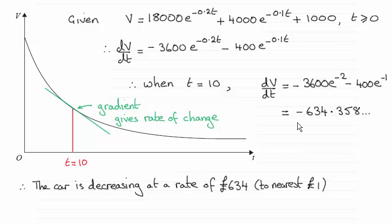We would expect a negative value because the gradient's negative. It's decreasing. But we've got to be careful here. The negative is telling us that it's decreasing. So we already know that. We need the magnitude of this, so we take the positive value of it. So we know it's decreasing, hence the negative value. But it's decreasing then at a rate of 634 pounds to the nearest pound. Okay?